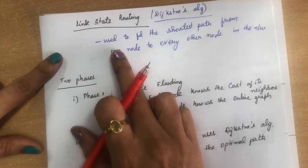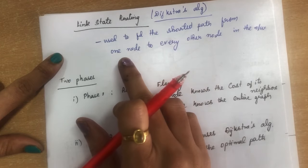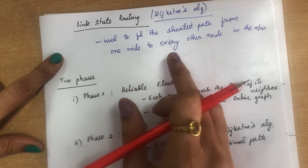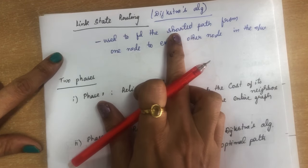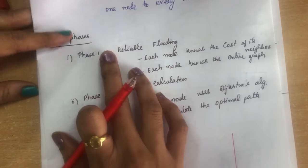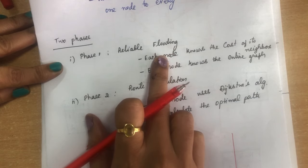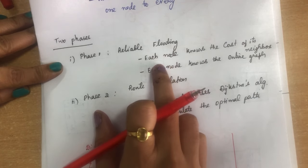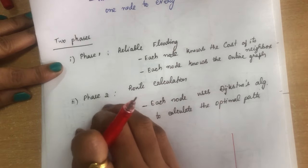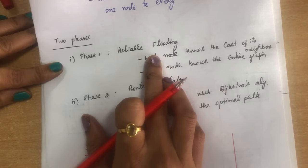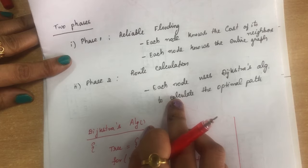The main aim of link state routing is to find the optimum path or shortest path from one node to all other nodes. Link state routing uses Dijkstra's algorithm to execute this process. There are two phases in link state routing. The first phase is flooding — after finding the link state information, it is flooded to the entire network. The second phase is route calculation using Dijkstra's algorithm.